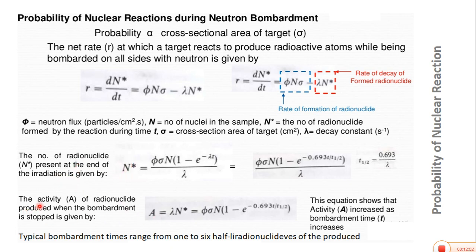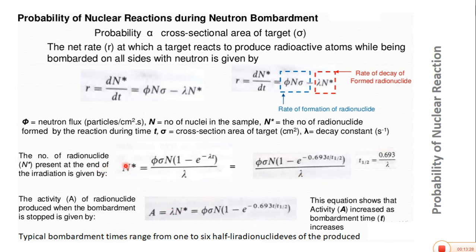The activity of radionuclide — greater the number of radionuclide, greater the activity, which is a simple correlation. The activity when bombardment is stopped is given by: A equals lambda times N-star, which equals phi times sigma times N times (1 minus e raised to the power negative lambda t). Lambda and lambda cancel, giving activity directly. This equation shows that activity increases as bombardment time increases — greater bombardment time means greater activity, meaning more radiation emitted by the radioactive material.